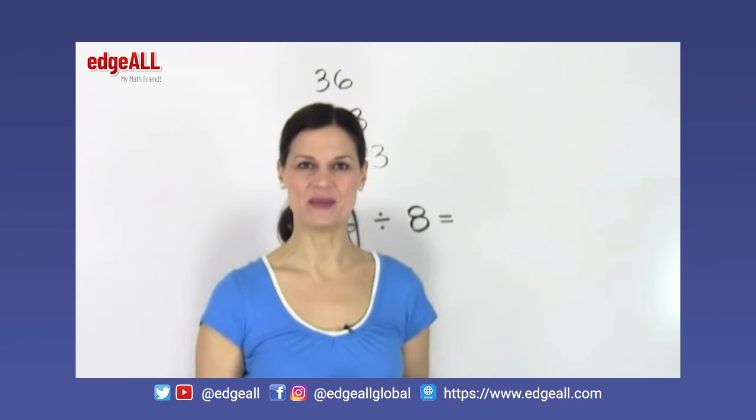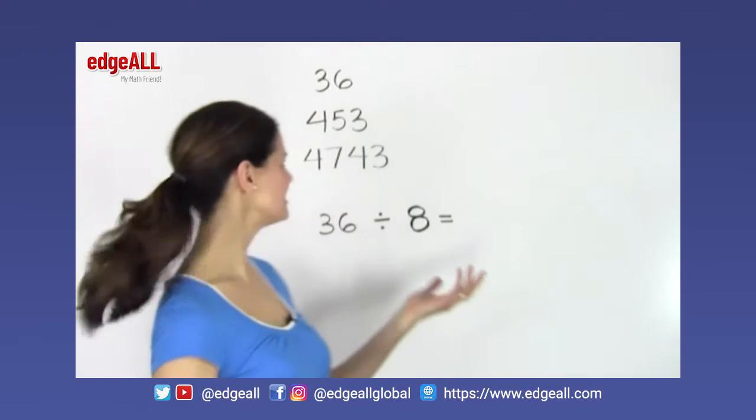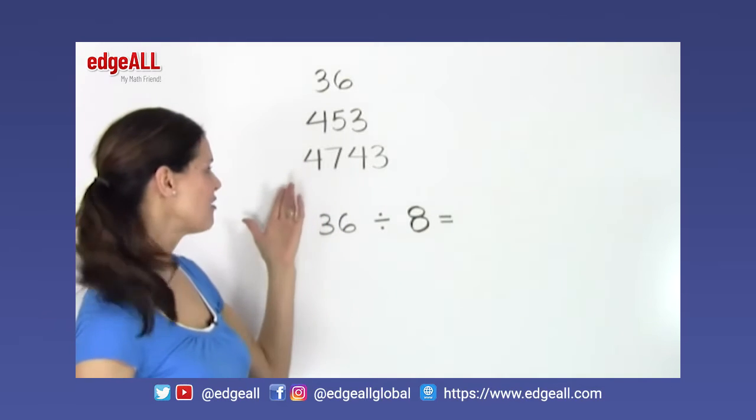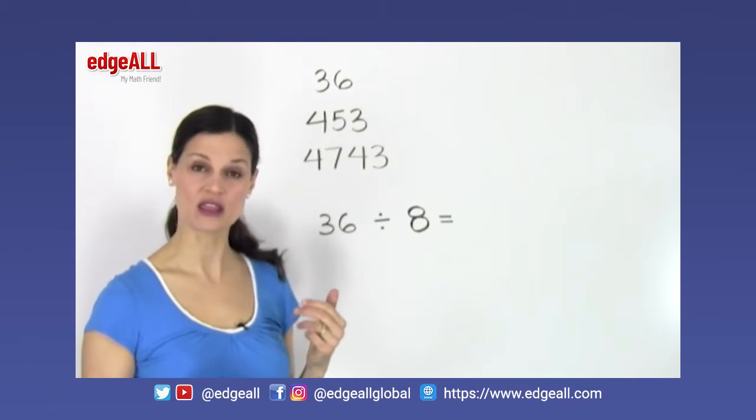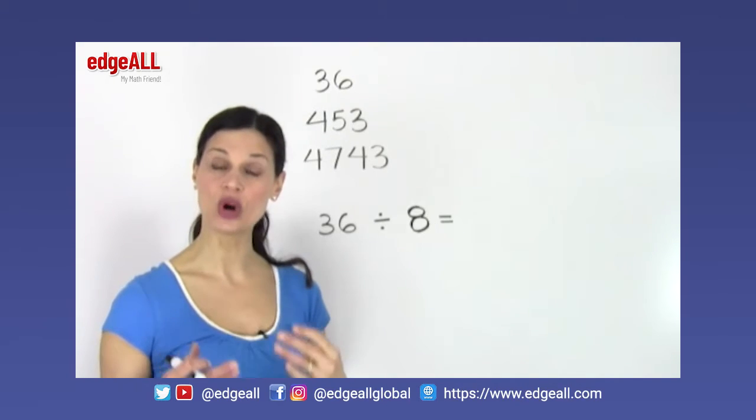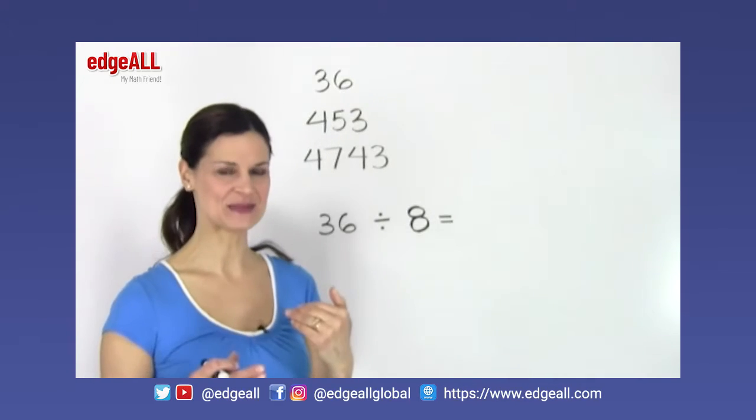So for example, if I'm working with numbers such as 36, 453, 4743, I want to round each of these before I start working with them to the highest place value.